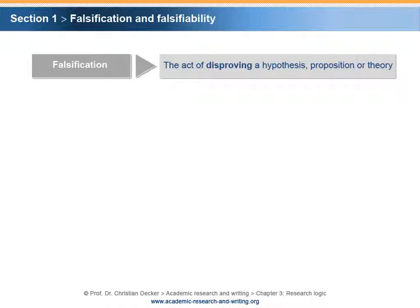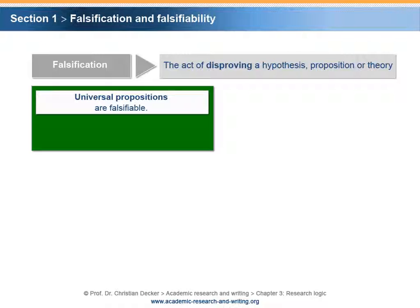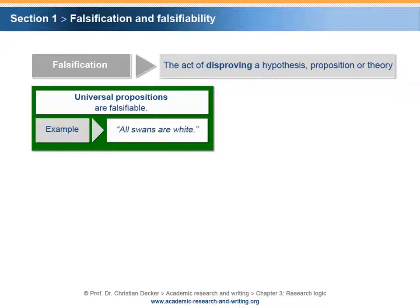In a previous chapter, it was pointed out that a distinction can be made between universal propositions and existential propositions. In the context of falsification, this differentiation becomes important. Universal propositions are falsifiable. An example is 'all swans are white.' This sentence is falsifiable either because someone discovers a black swan, or because of the possibility that someone might identify a swan with a color that is not white.